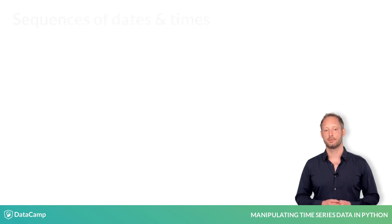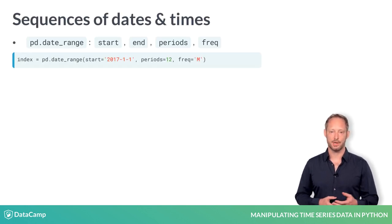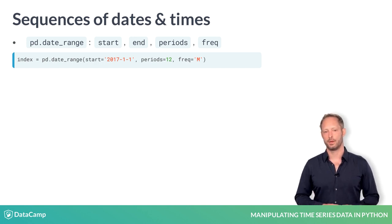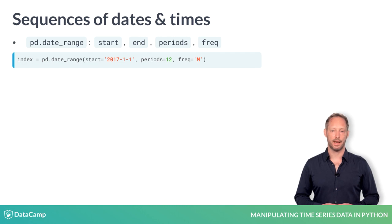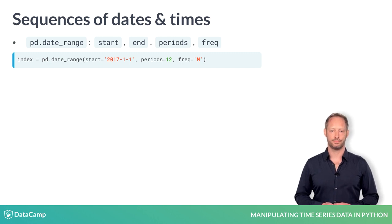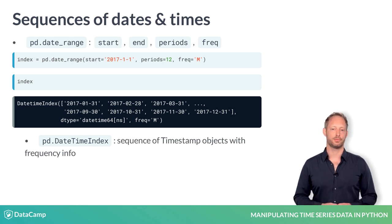To create a time series, you need a sequence of dates. To create a sequence of timestamps, use the Pandas function date_range. You need to specify a start date and either an end date or a number of periods. The default is daily frequency. The function returns the sequence of dates as a DatetimeIndex with frequency information.